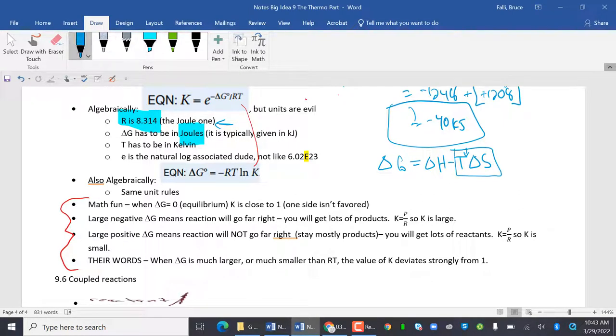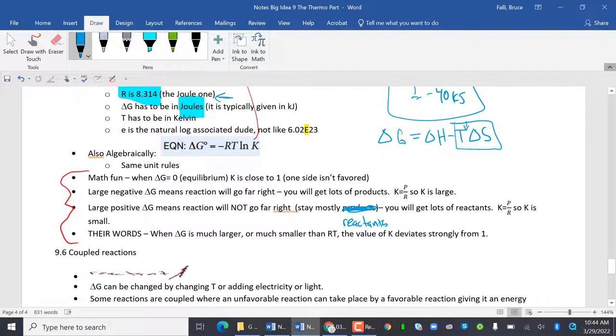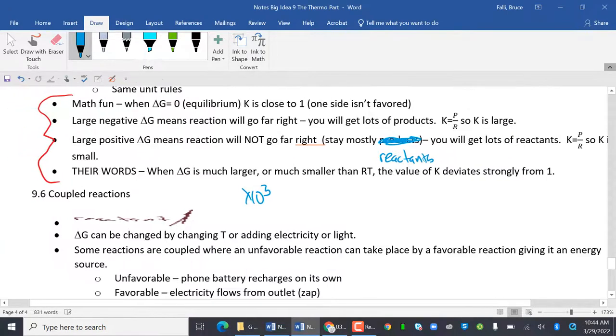Math fun. When delta G equals zero, it's at equilibrium. K is very close to one. So one side isn't favored. That means that reactants and products are about the same. A large negative delta G means the reaction will go from the right, lots of products. K is P over R, so K is large. A large positive delta G means reaction will not go far right, meaning it's non-spontaneous. Stay mostly reactants. You'll get lots of reactants. So K equals P over R, so K is small. When delta G is much larger or much smaller than RT, the value of K deviates strongly from 1. Much larger or much smaller is like 10 to the third.